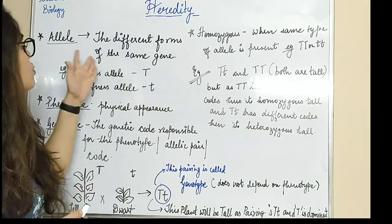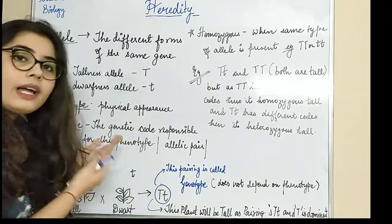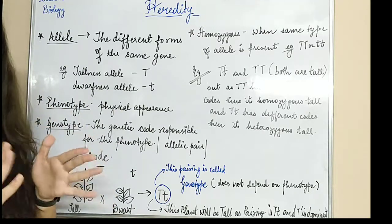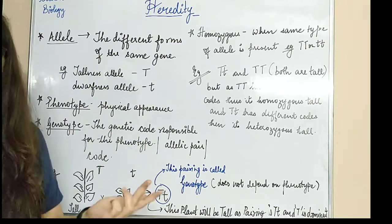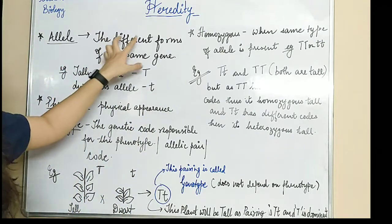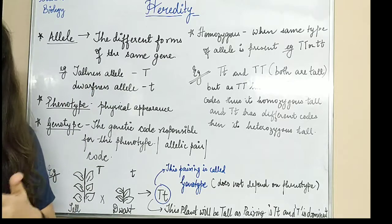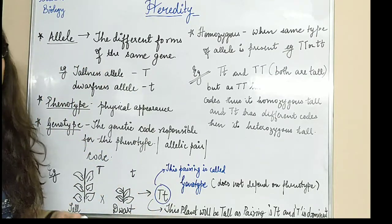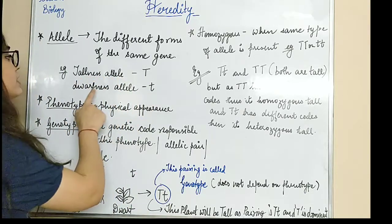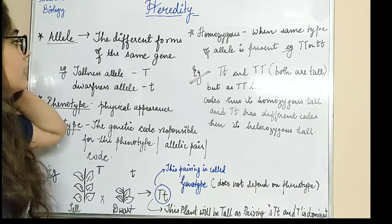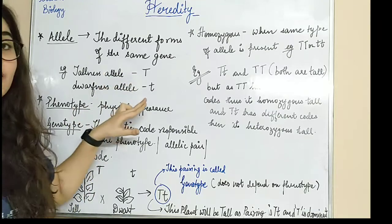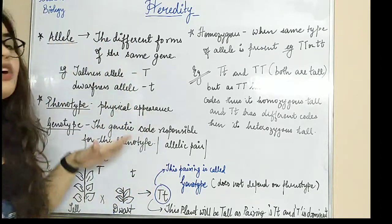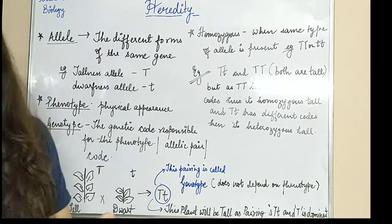Tallness and dwarfness. The gene for tallness is height-related, and the gene for dwarfness is also related to height. So both genes are responsible for the same thing — that is height — but in different forms. The allele responsible for tallness is capital T, and the allele responsible for dwarfness is small t. Gene is the same, but the form is different. That is called different forms, or alternate forms, of the same gene — that is your allele.